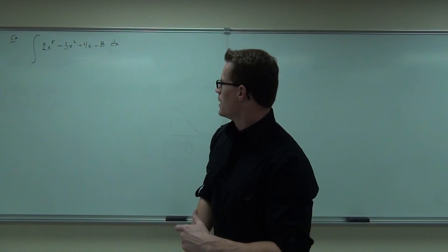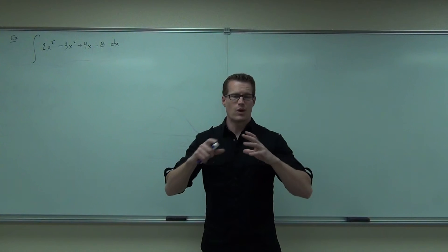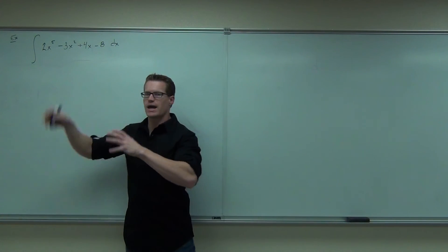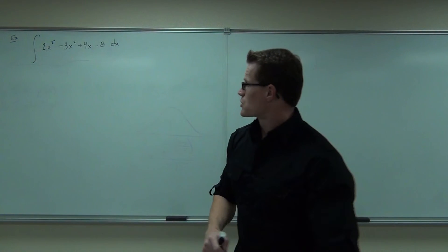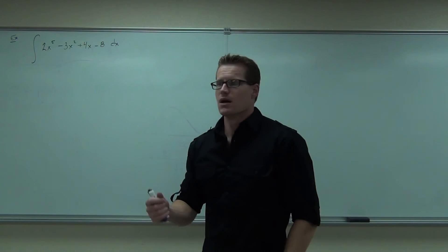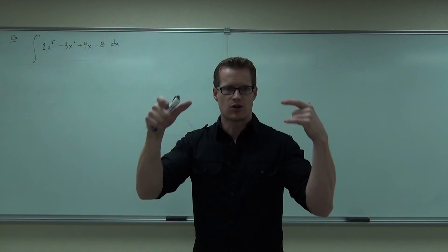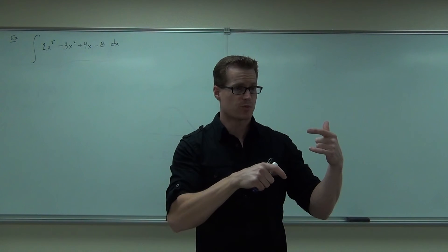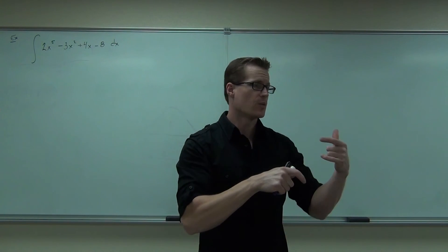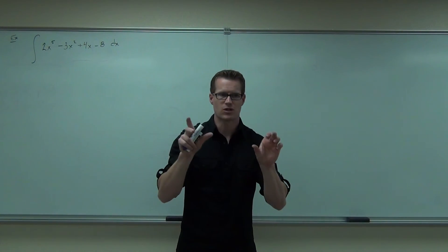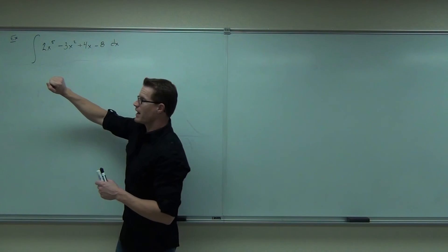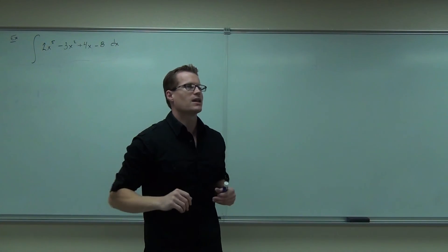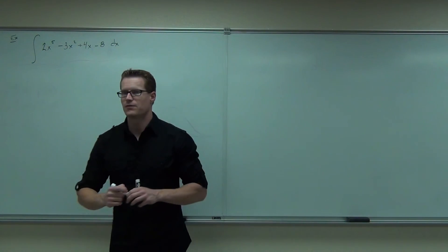When it says an integral, that means find the anti-derivative of whatever function in terms of the given variable. So this says with respect to x — our function has to be in terms of x. So when we have 2x to the fifth minus 3x squared plus 4x minus 8, do I have to split that up term by term? With addition and subtraction, each little piece is fine. With multiplication and division, each little piece is not fine.